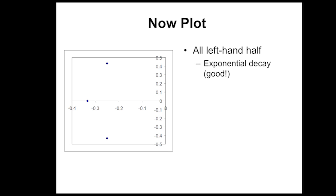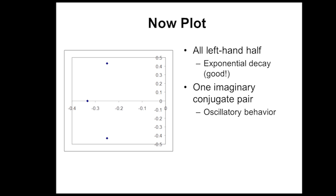Now let's plot these. The imaginary axis is the y-axis and the real axis is the x-axis. All of our poles are on the left-hand side of the plane — they're all negative for their real parts. So that's a good sign it's going to be a stable system. You do have some roots with imaginary parts, so it's going to oscillate, but it will eventually converge to a steady state value.